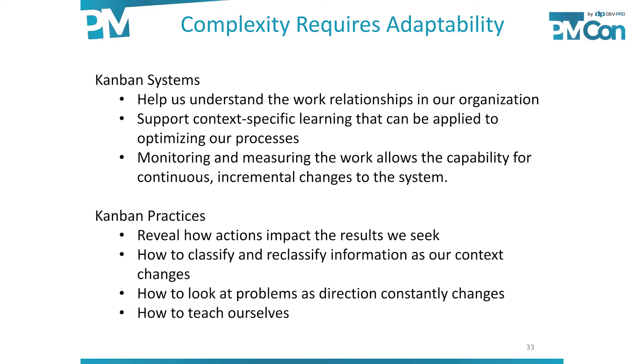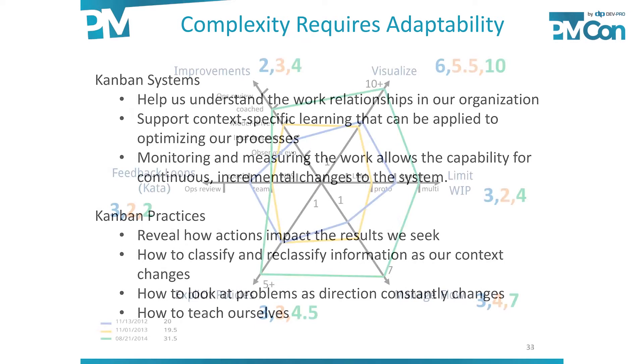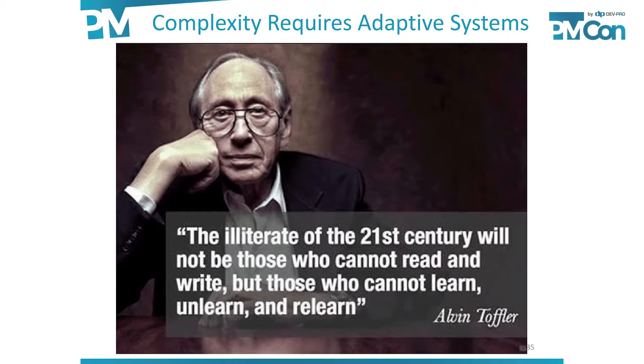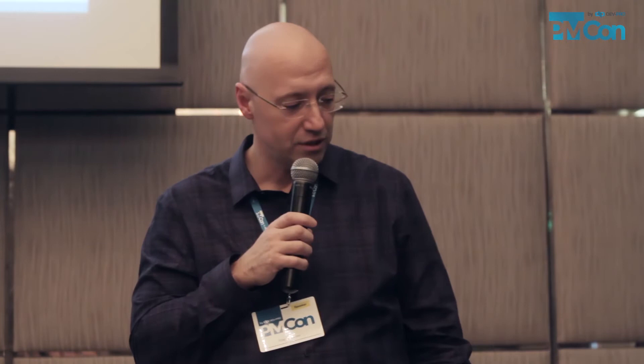There are a lot of problems that come from the fact that we deal with complex systems but treat them as simple systems. To solve problems in complex systems we need high adaptability, we need to manage patterns, and we need to constantly learn, observe, and pay attention to what we do. In complex systems the boundaries change as you interact with the system — a person is a good example: I'm not wearing the same shoes I wore when I was five. Our systems are complex, they evolve constantly, and we constantly have to adapt.